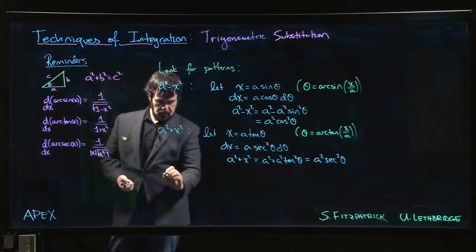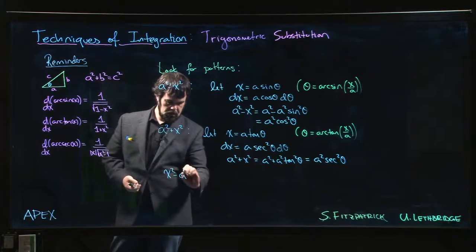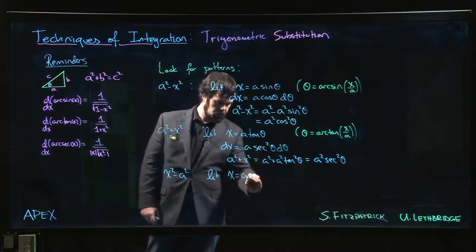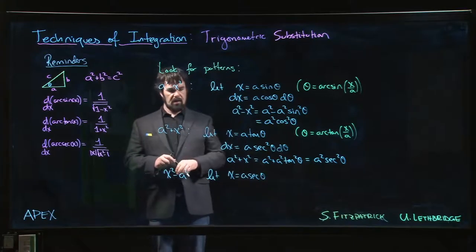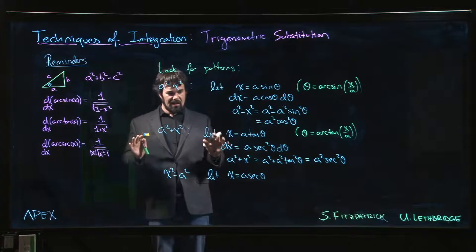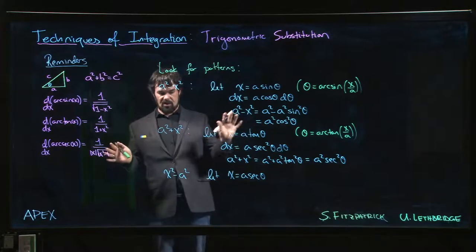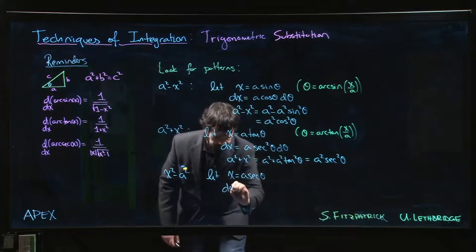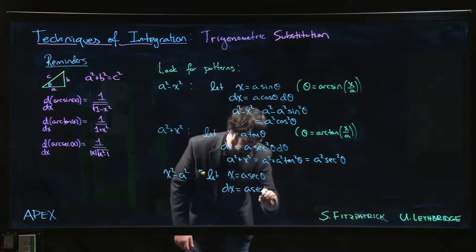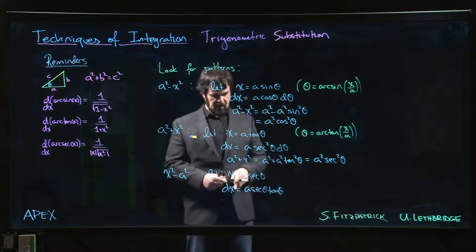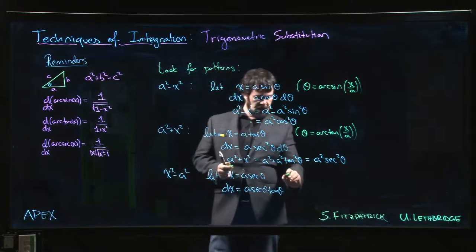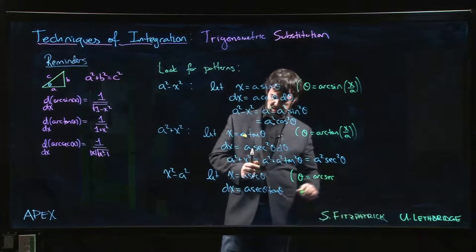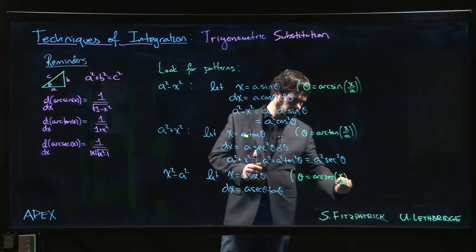The last pattern, if I have x squared minus a squared, that's when I want to consider a secant substitution, x equals a secant theta. Now secant substitutions can get a little tricky; we saw some examples in the previous section and secant integrals aren't always the most pleasant creatures. But nonetheless, we can attempt them. So dx would be a times secant theta tan theta. We might want to keep in mind here that what we really mean is that theta is arc secant x over a.